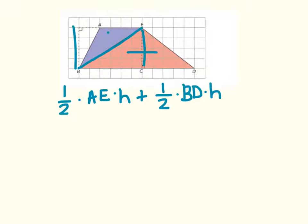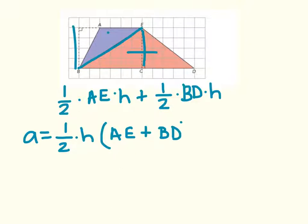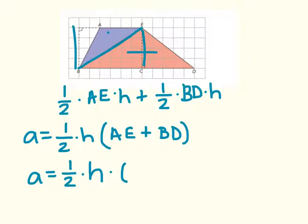Now we can use what we know about the distributive property to simplify this a little bit. We can pull out one half times height, which simply leaves us with line AE plus line BD inside our parentheses. So the area of a trapezoid is equal to one half times height times the sum of the lengths of the parallel sides, which we call the bases. The parallel sides on a trapezoid are called the bases, and we label them base B sub 1 and base B sub 2. So here's our formula: A equals one half times height times (B sub 1 plus B sub 2).